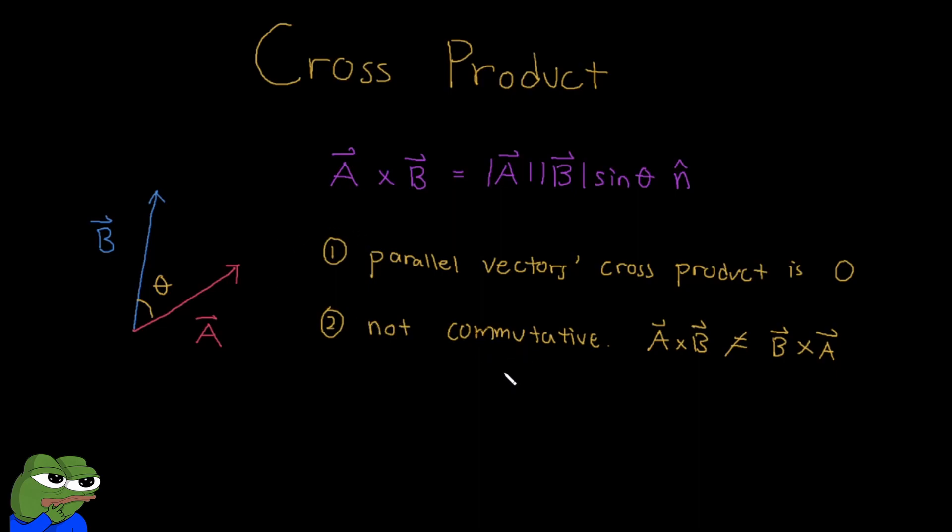Secondly, it's not commutative. So what does this mean? A cross B is definitely not equal to B cross A in most cases. Why is that? For example, we can take a look at our example here.